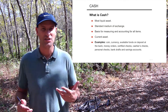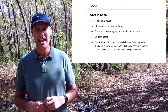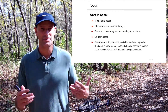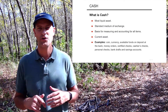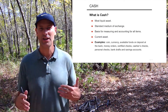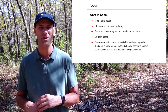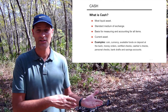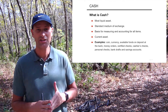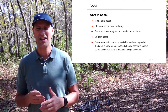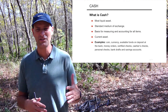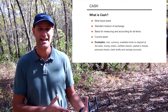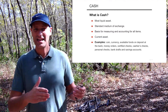Cash is very important. It's the medium of exchange in the U.S. and it is a current asset. Examples of cash — this seems somewhat straightforward, but the more you dig into it, the less clear-cut it becomes. Coin, currency, available funds on deposit in a financial institution are considered cash. Money orders, some certified checks, cashier's checks, personal checks, bank drafts, savings accounts — all of those items typically count as cash.